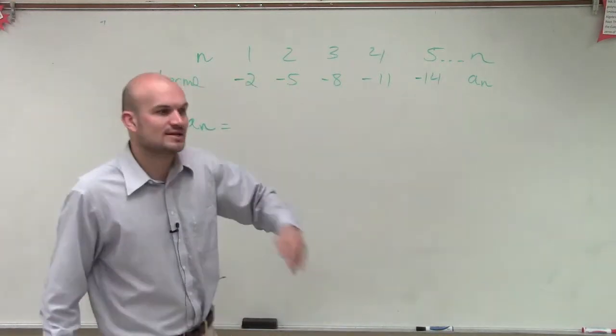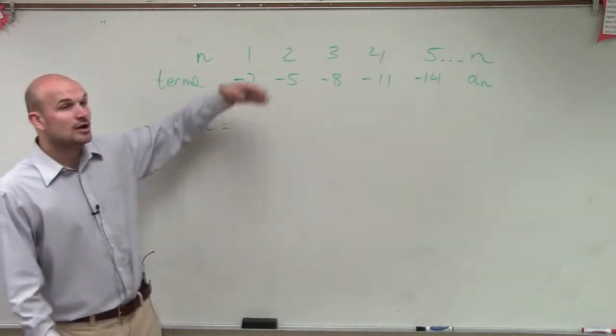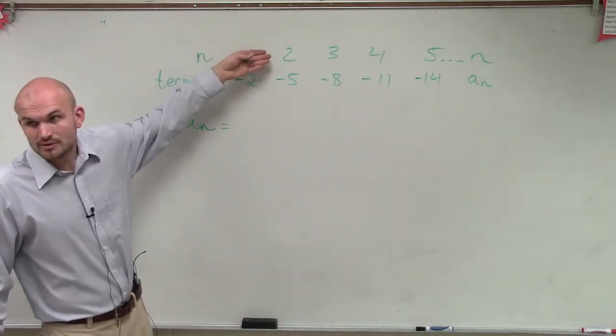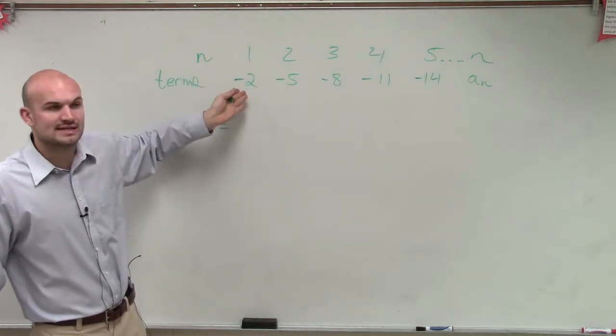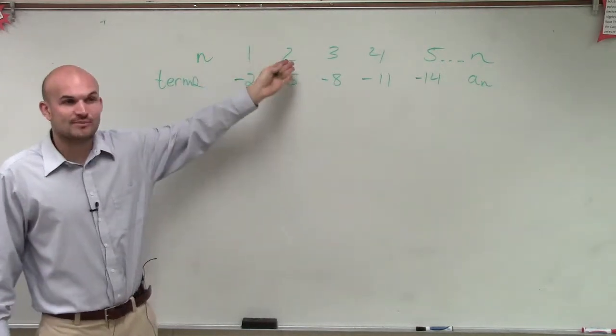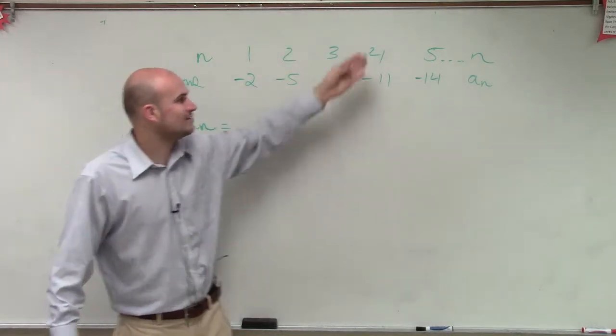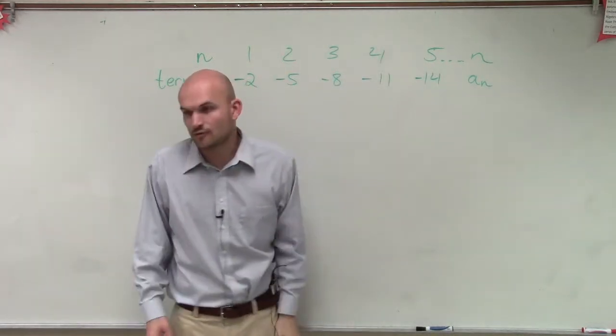Now we have a sequence that goes in order, where we say, all right, the first value in my sequence is equal to negative 2. The second value in my sequence is equal to negative 5. The third, negative 8. 4, negative 11. 5, negative 14.